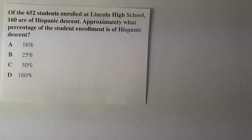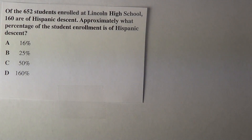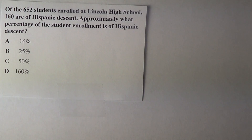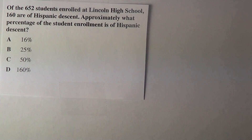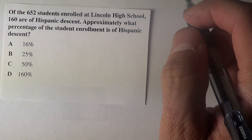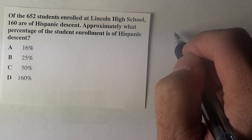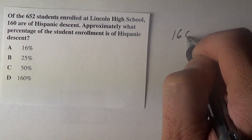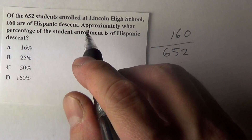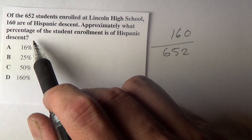Hey Apaches, this is our next problem. Let's look at the question. It says, of the 652 students enrolled at Lincoln High School, 160 are of Hispanic descent. So if we wanted to write this in division form, it would be 160 over 652. Approximately what percentage of the student enrollment is of Hispanic descent?